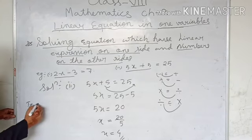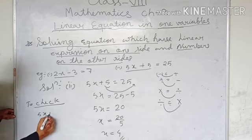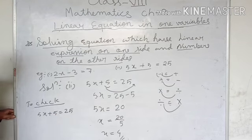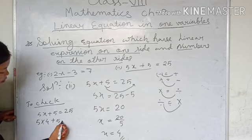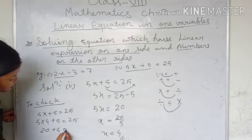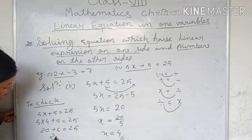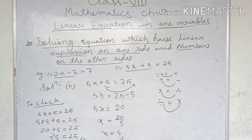To check: 5x plus 5 is equal to 25. The value of x is 4, so putting the value: 5 into 4 plus 5 is equal to 25. 5 fours are 20, and 20 plus 5 is equal to 25. So 25 equals 25 — hence we got the correct answer. Thank you all. In this video I covered only this much, and in the next video I will start the exercises of chapter number 2. Thank you and have a nice day. Take care.